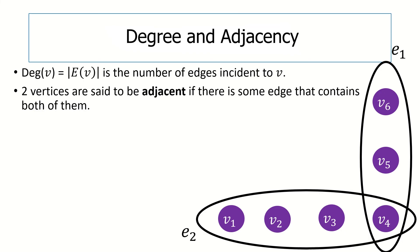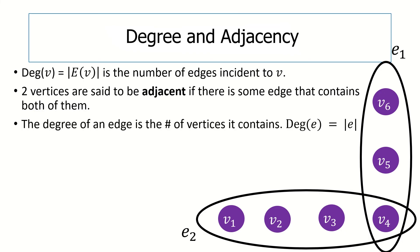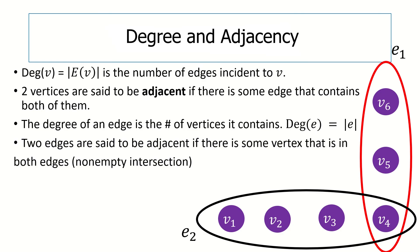Next, let's define degree and adjacency for edges. The degree of an edge is the number of vertices incident to that edge — it's the edge's size. Edge E sub 1 in this example has degree 3 because it contains three vertices. Two edges are said to be adjacent if they have at least one vertex in common, or more formally, if their intersection is not empty. In this case, E sub 1 is adjacent to E sub 2 because they share vertex V sub 4.